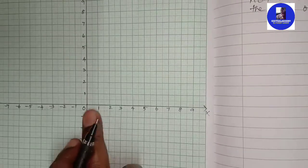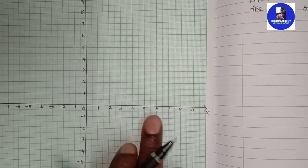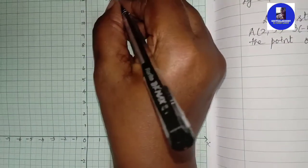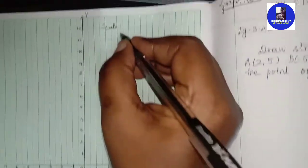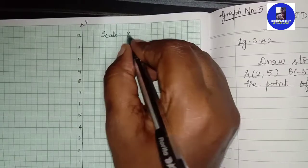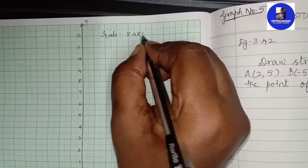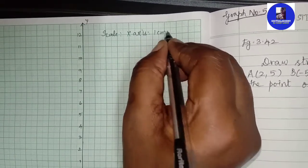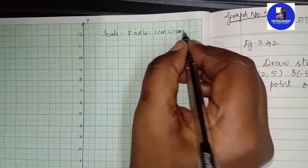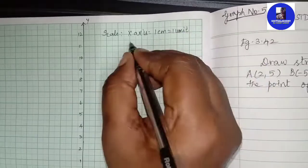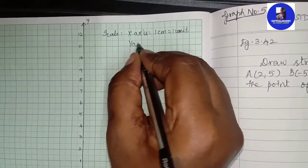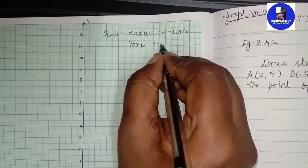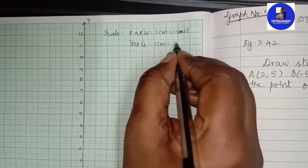Scale: 1 centimeter equal to 1 unit. On the x-axis, 1 centimeter equal to 1 unit. On the y-axis, 1 centimeter equal to 1 unit.